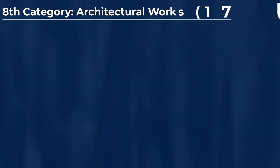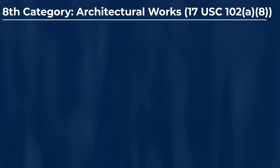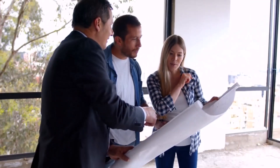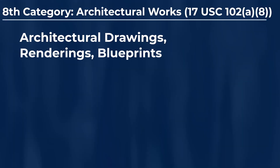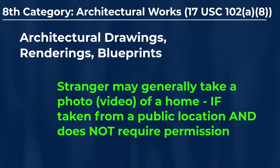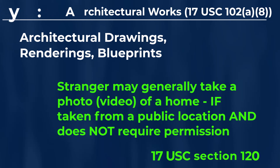The eighth and final category of creative works that can generally be protected by U.S. copyrights is for architectural works. Examples may include things like architectural drawings, architectural renderings, and architectural blueprints. However, note that once a given building is built and it exists, it's generally perfectly fine for some stranger to photograph or film that building — including if it's a home — if the stranger is doing so from a public location, and there is no need to obtain permission from the building's owners or tenants. Such photos or videos of the building, as long as they are taken from a public location, do not infringe the copyright in the architectural works. This rule is set forth in Title 17 of the United States Code, Section 120.